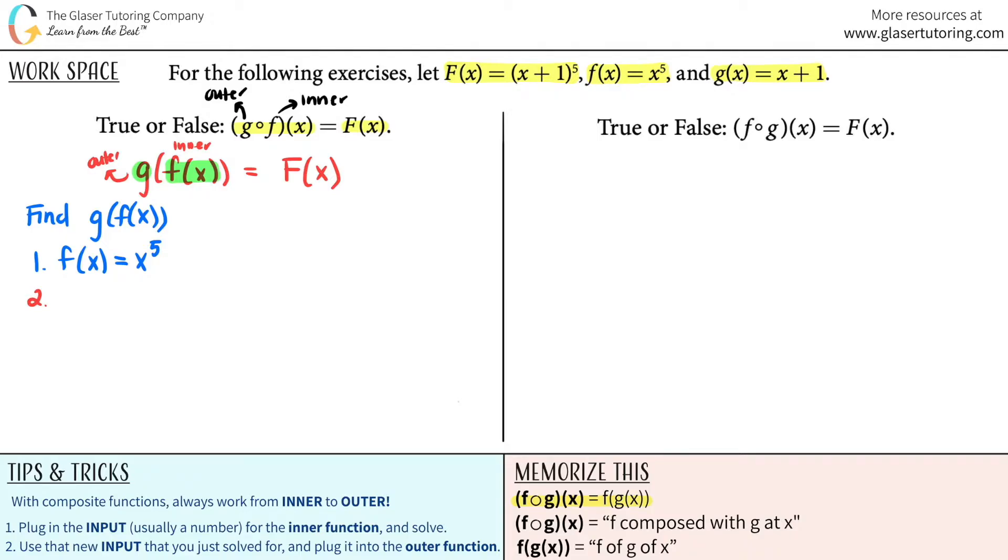Okay. Now the second part to finding composite functions, you use that answer that you have as your new input that you just solved for, and you plug it into the outer function. So my outer function is the G function now. And what am I going to be plugging in? Oh, it's the answer from before. So I'm going to be plugging in X to the fifth. And now I go to my G of X function. Anytime that I see an X value, I'm going to be replacing it for this. So instead of just X plus one, it's going to be X to the fifth plus one, you're substituting your X value for what the answer was before.